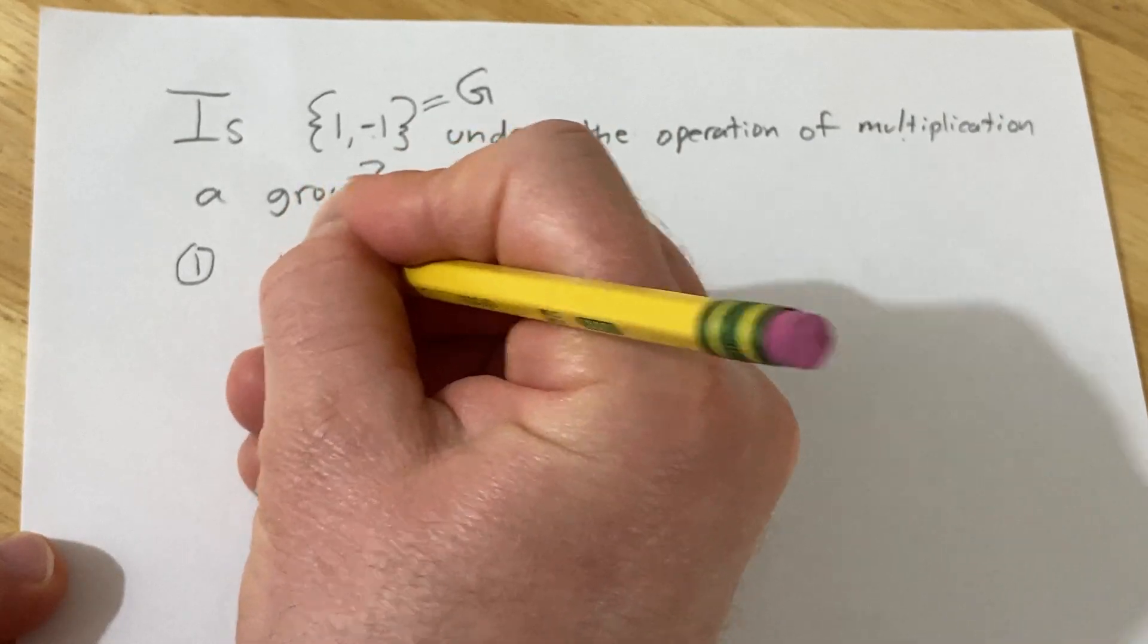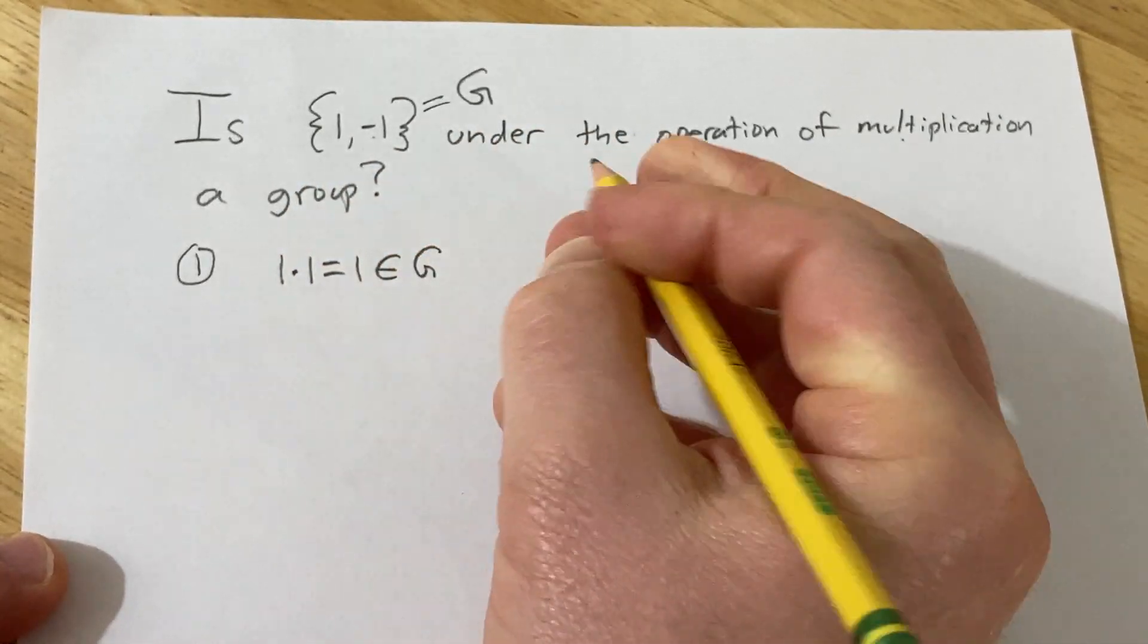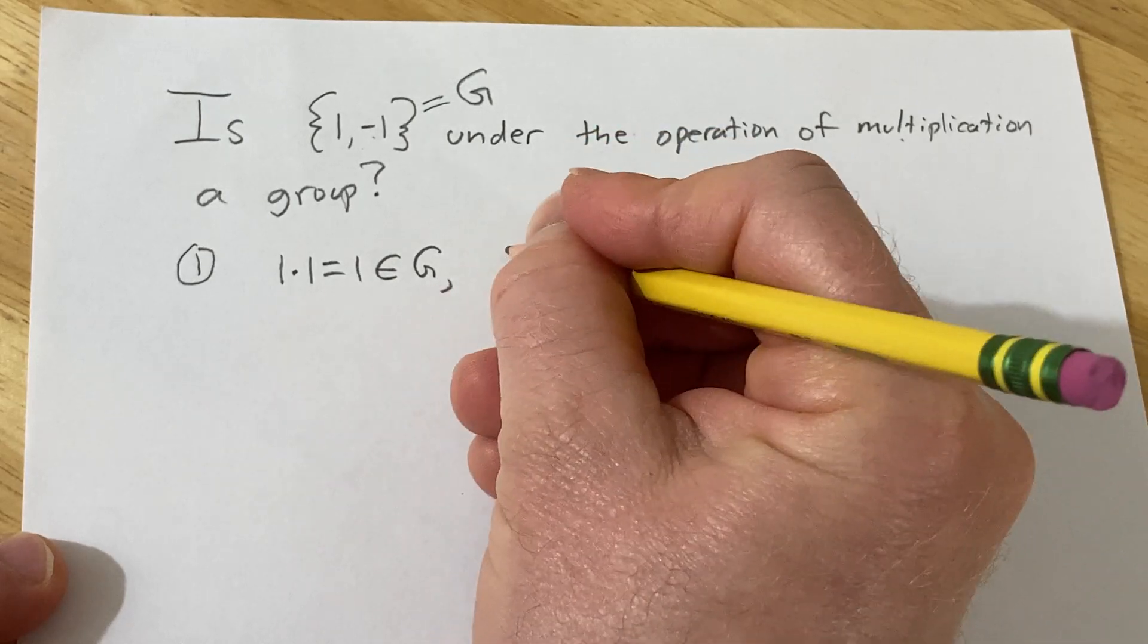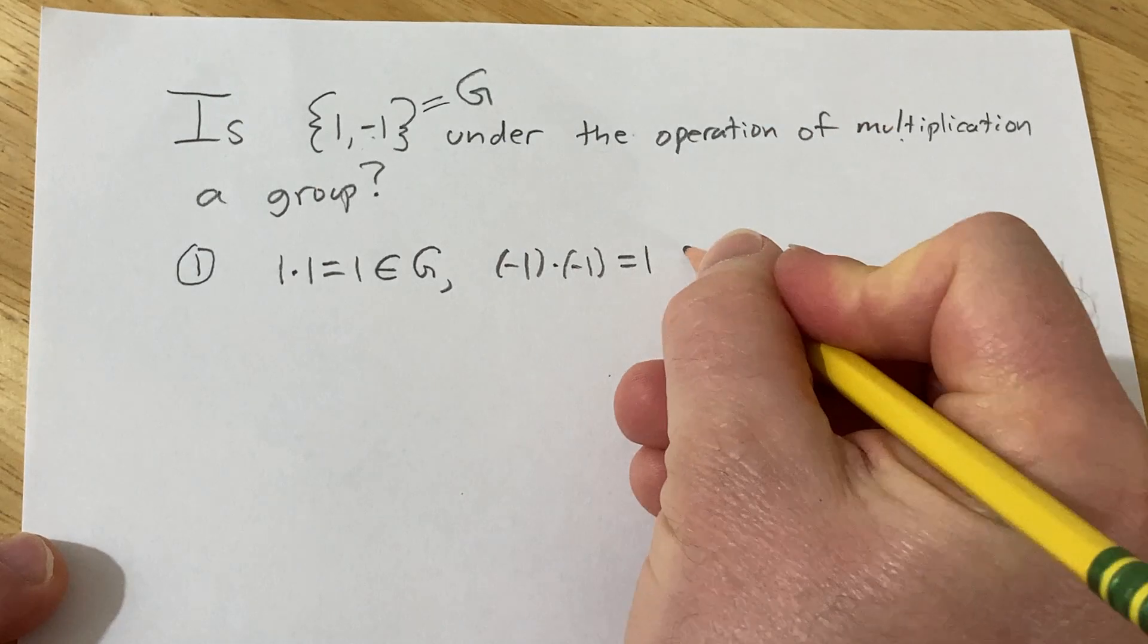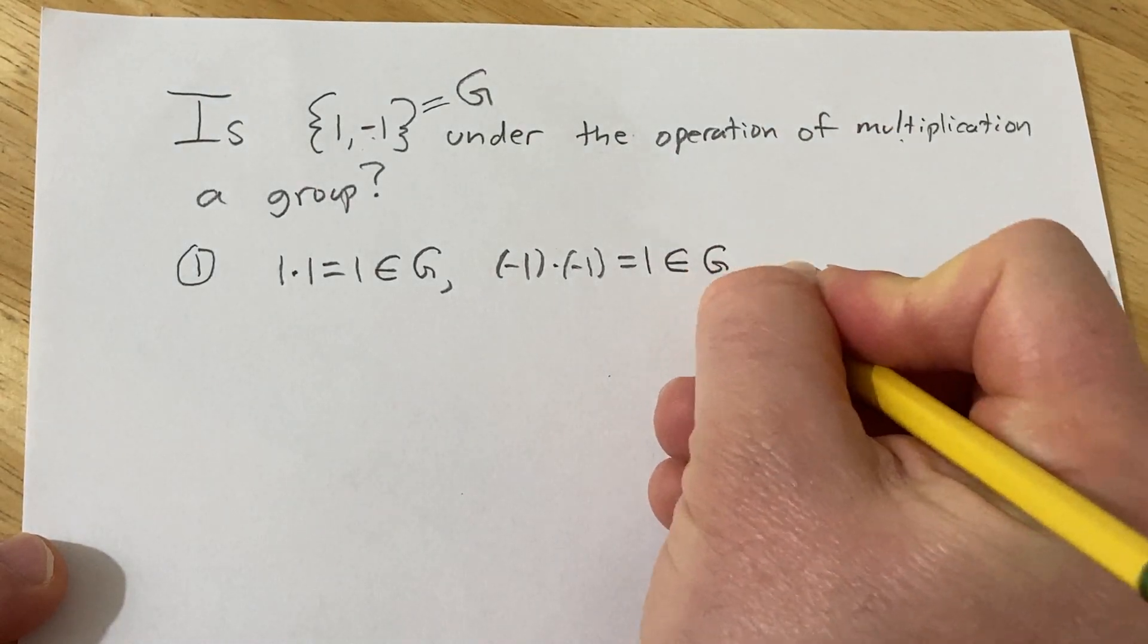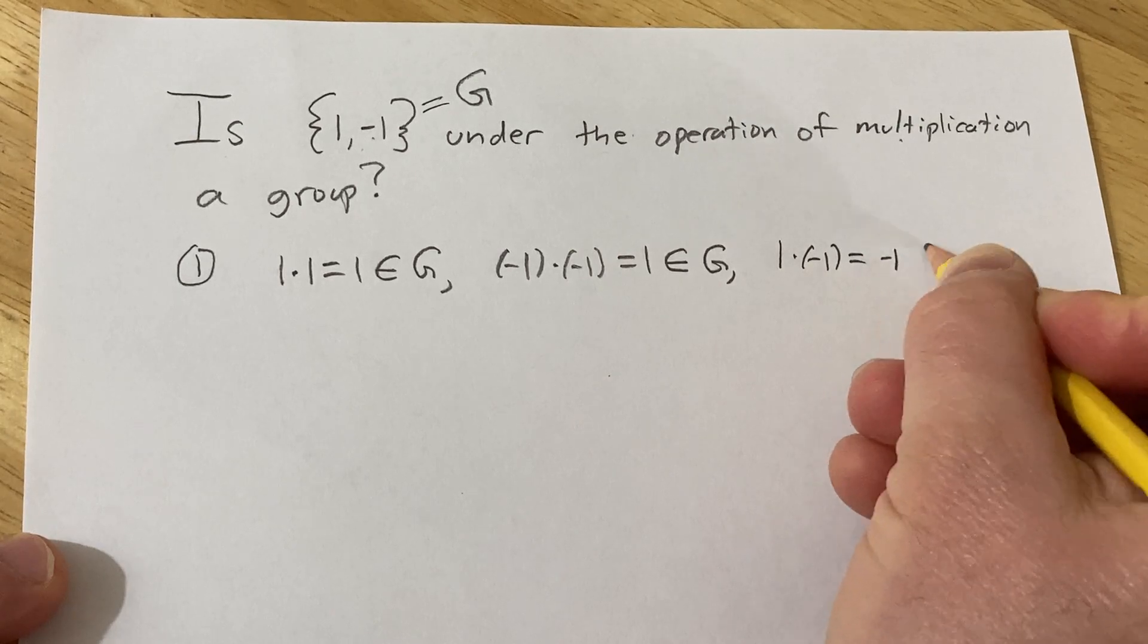So 1 times 1 is equal to 1, which is in g. And then we also have negative 1 times negative 1, that's equal to 1, which is in g. And then we have 1 times negative 1, which is negative 1, which is in g.